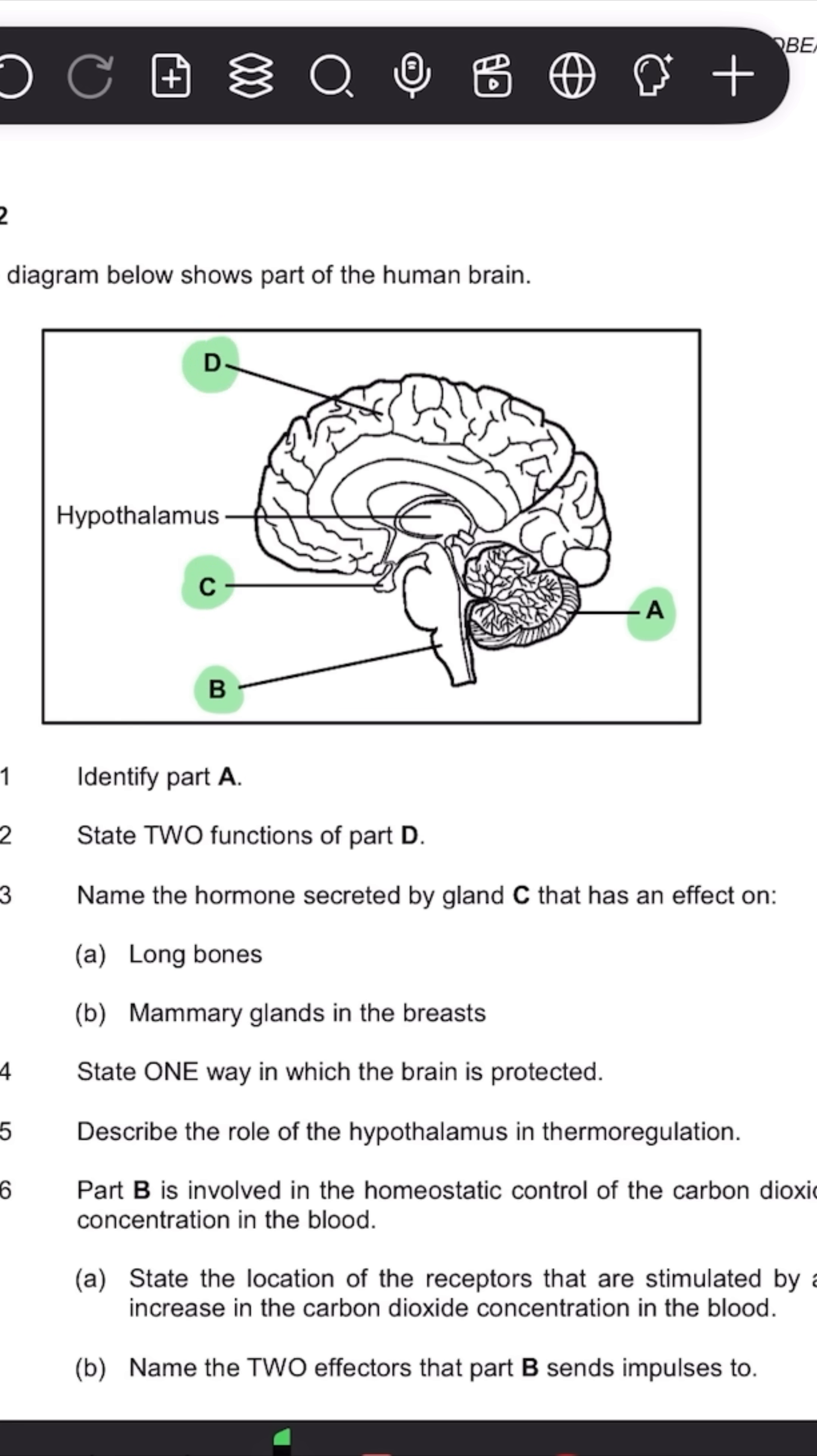So sometimes they don't necessarily ask you to label part A, but they say, what is the function of part A? So when you have written in what is A, you automatically look up and you see the word that is A. And so then when they just ask for the function and not what it is, you can correctly write that in.